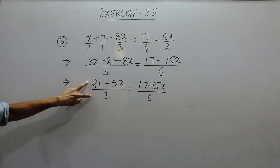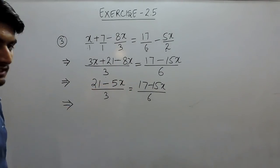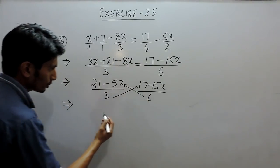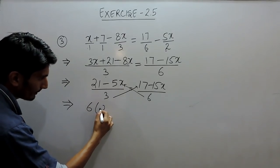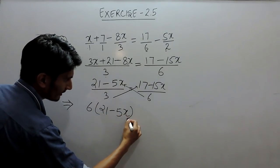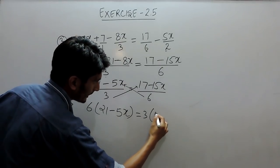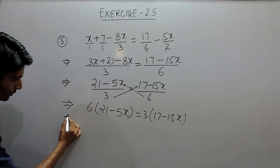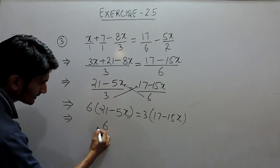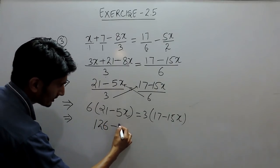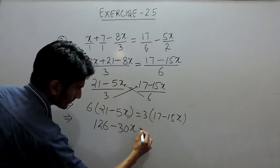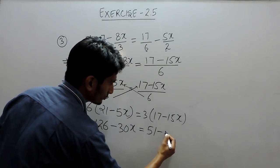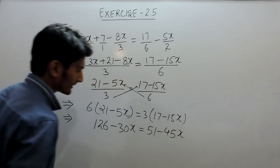Now, we have only one fraction on both sides. So you can simply cross multiply these. When 6 is multiplied by 21 minus 5x, and when 3 is multiplied by 17 minus 15x, this will be equals to 6 into 21 is 126, and 6 into 5 is 30x, equals to 17 into 3 is 51, and 15 into 3 is 45x.